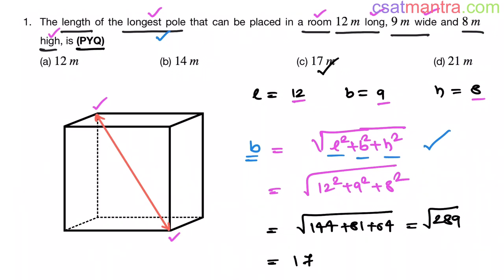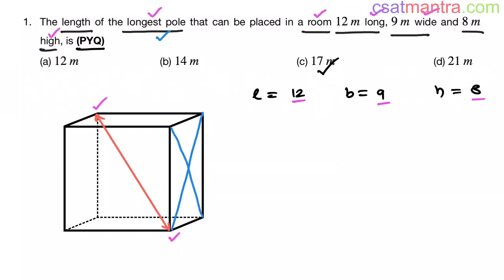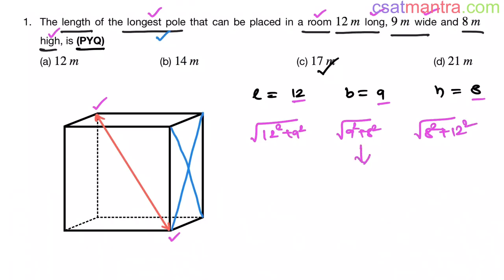Other than the body diagonal, we also have face diagonals. If the question asks for the length of the shortest face diagonal, then we calculate: 12² + 9², 9² + 8², and 8² + 12². We find the smallest of these values — that is the shortest face diagonal, and the largest is the longest.